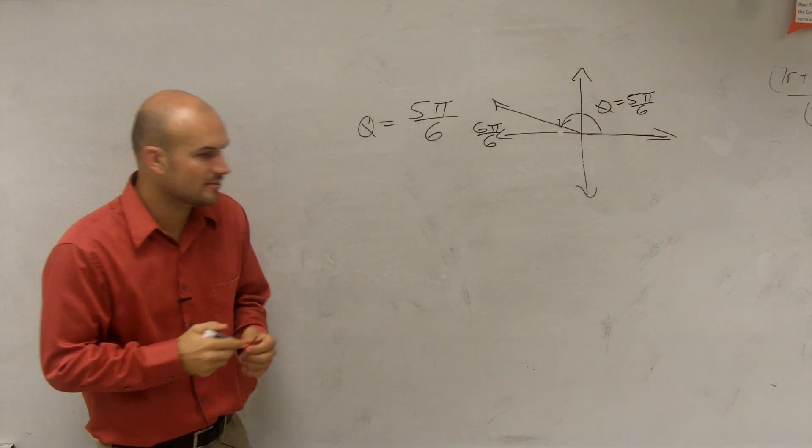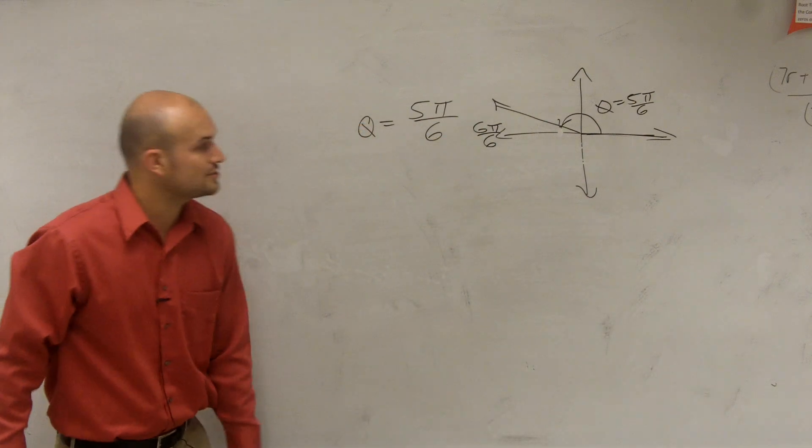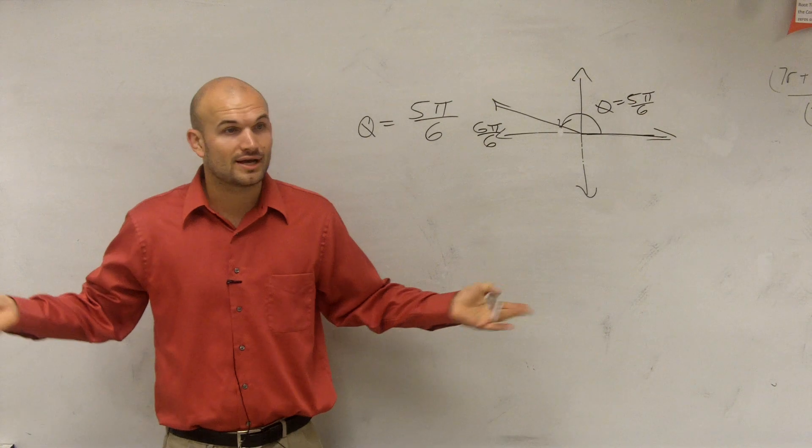So remember ladies and gentlemen, to find co-terminal angles, that just means angles that have exactly the same initial and terminal, where here's your initial side, here's your terminal. That's it. That's all you've got to figure out.